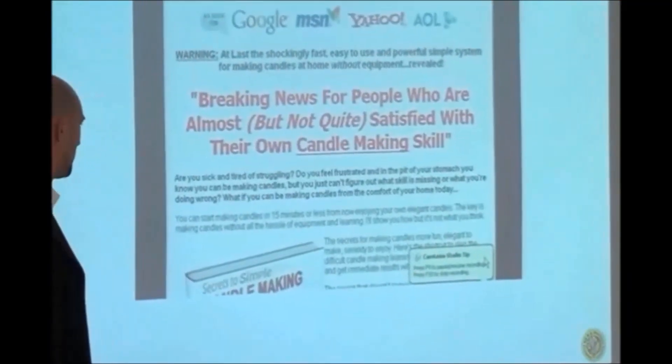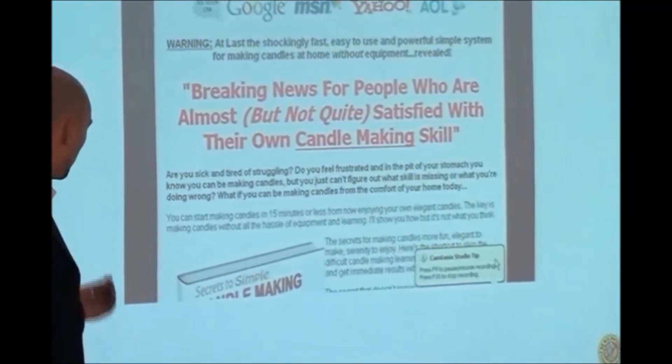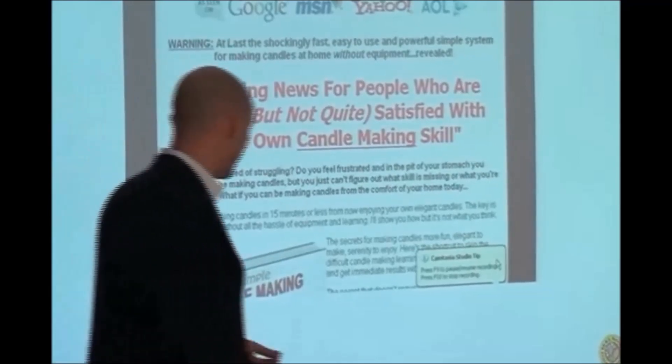Here we have a Twitter example — someone's sending it out in a tweet: 'For business owners who are almost, but not quite satisfied with their Twitter marketing.' This shows it works in any business. They made a slight modification, a slight adaptation: 'Breaking news for people who are almost, but not quite satisfied with their candle making skill.' The copy following it says: 'Are you sick and tired of struggling? You feel frustrated in the pit of your stomach — you know you can be making candles, but you just can't figure out what skill is missing or what you're doing wrong.' They're using something a contractor used, something marketers used, something from the 1960s.